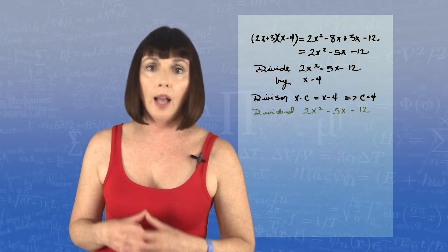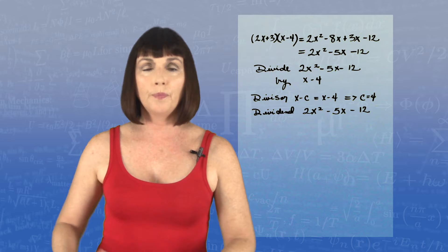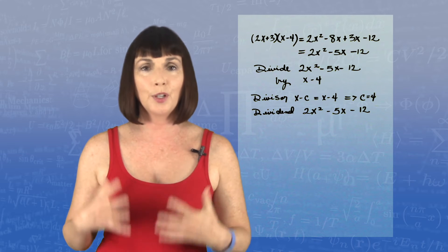Now our dividend, the thing we're going to divide, is 2x squared minus 5x minus 12. So here's the synthetic division process.